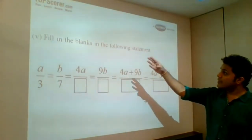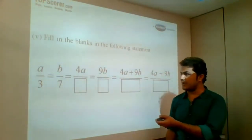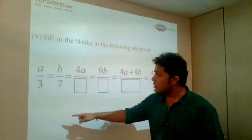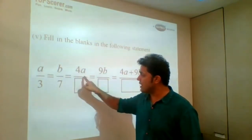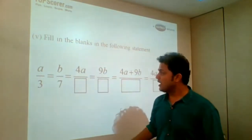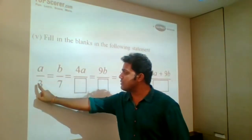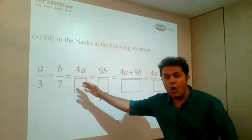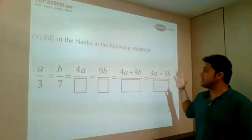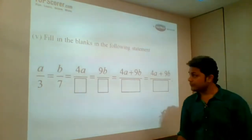Now see this example. Fill in the blanks in the following statement. This is the question from the chapter ratio and proportion. You can see A upon 3 is equal to B upon 7 is equal to 4A upon box. You need to fill in the correct answer. 4 is multiplied with A, so 4 has to be multiplied with 3. So here you need to write as 12. Accordingly, you will solve this activity and complete the boxes.